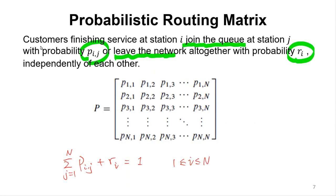Let's revisit probabilistic routing. A customer finishes service at station I and joins the queue at station J with probability P_ij, or leaves the network with probability R_I, independently. If you sum each row — from station one to all other stations — and add the probability to leave R_I, it should equal one. This is the total probability.